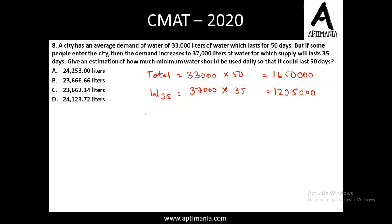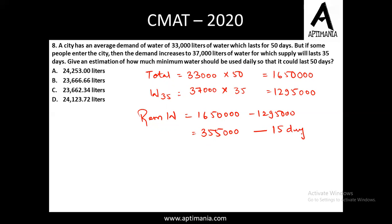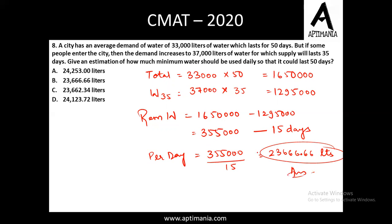The remaining water is 1,650,000 − 1,295,000 = 355,000 liters. This water is to be used in the 15 remaining days. So per day consumption will be 355,000 / 15, which gives us approximately 23,666.66 liters. The correct answer for question number 8 is option B, that is 23,666.66 liters.